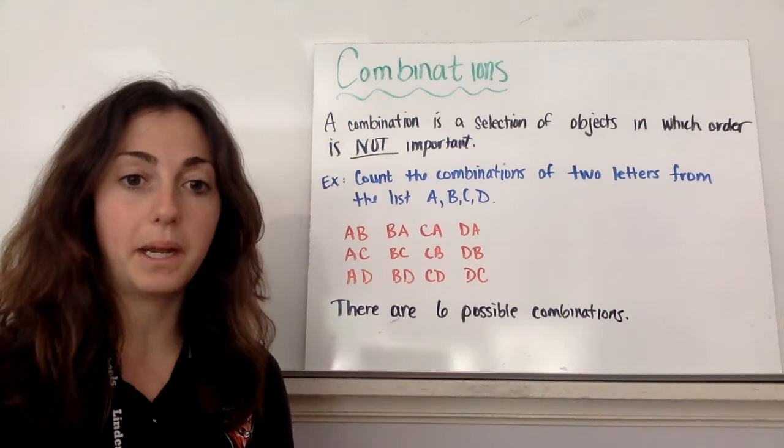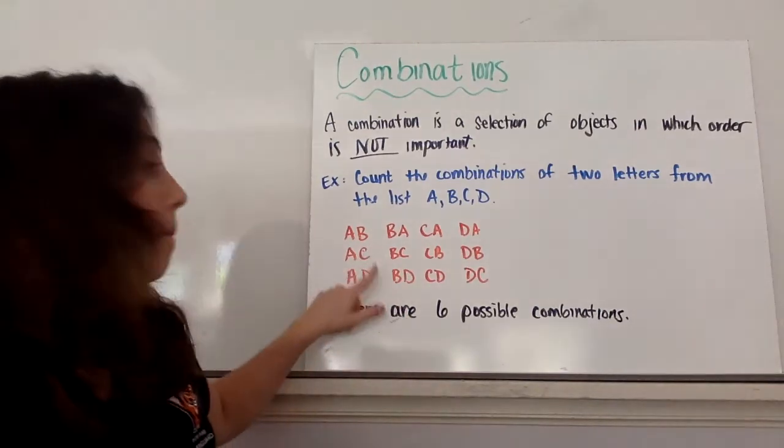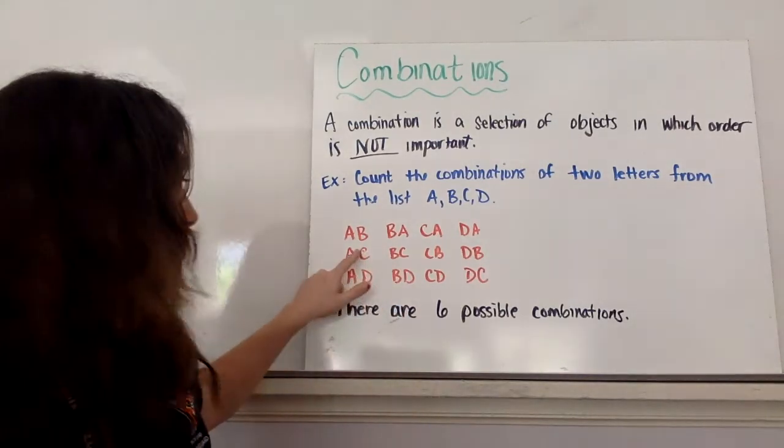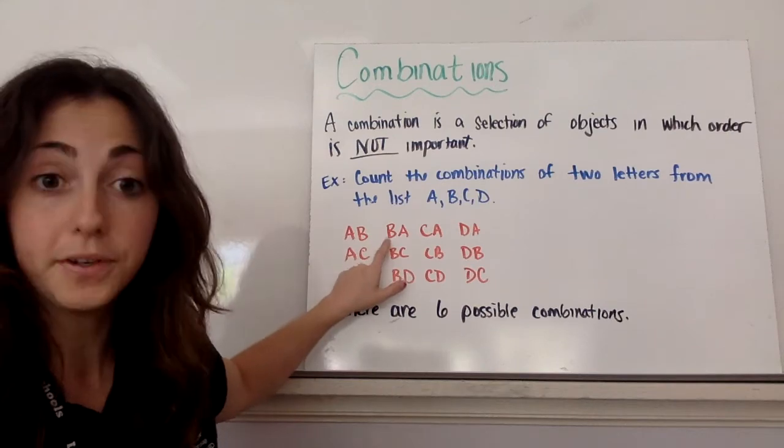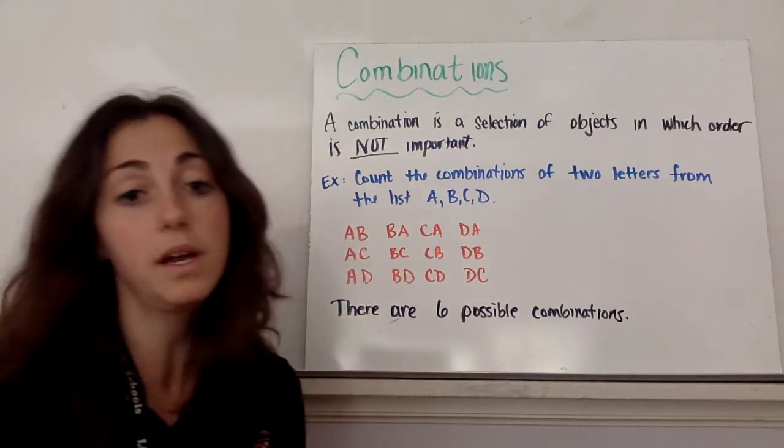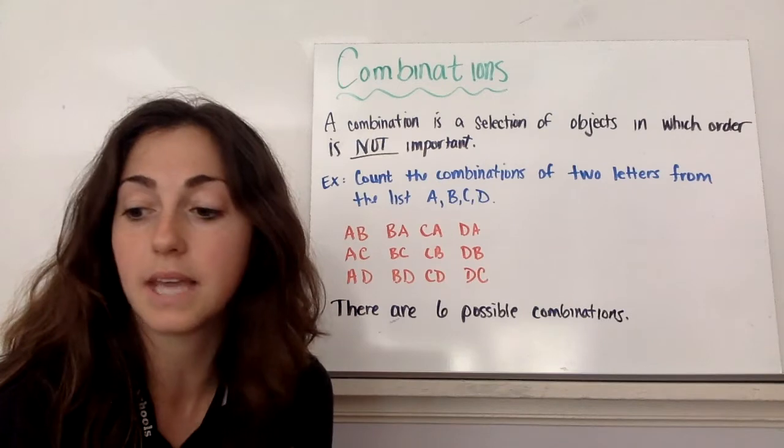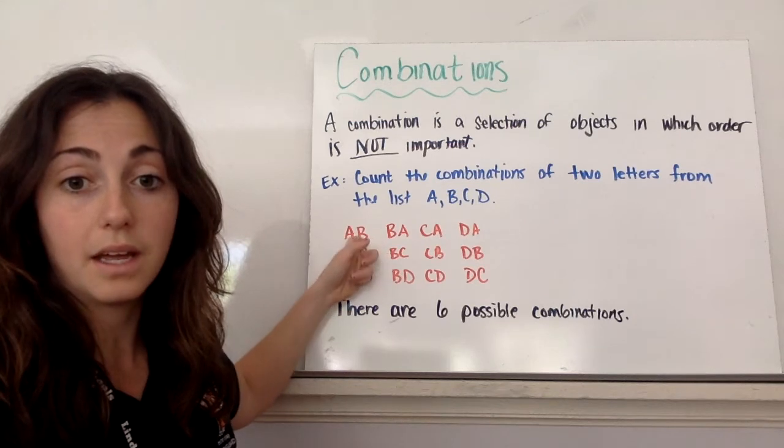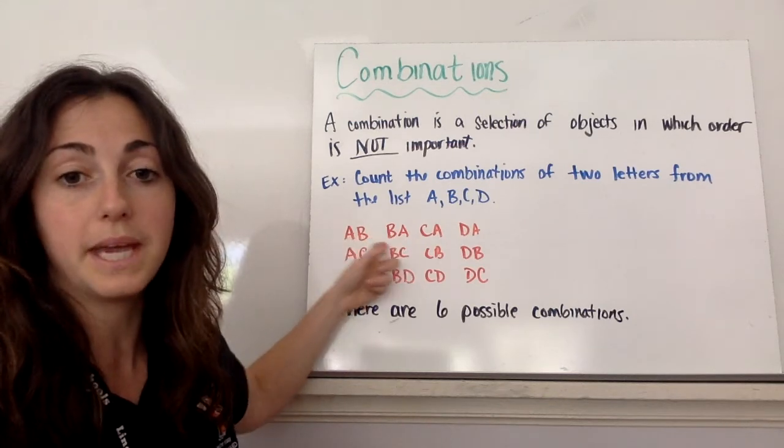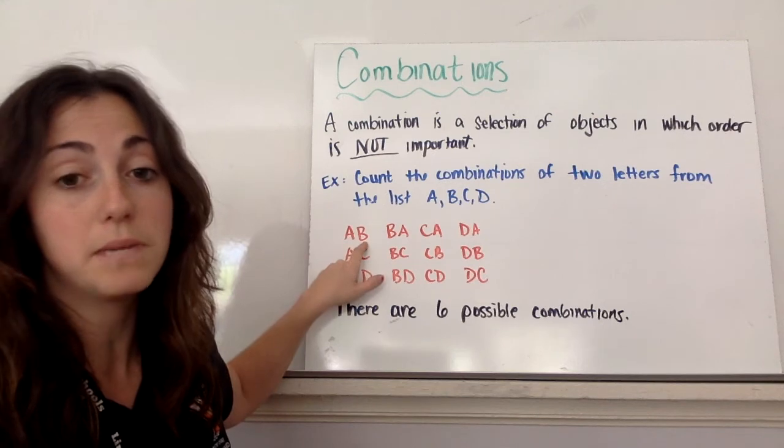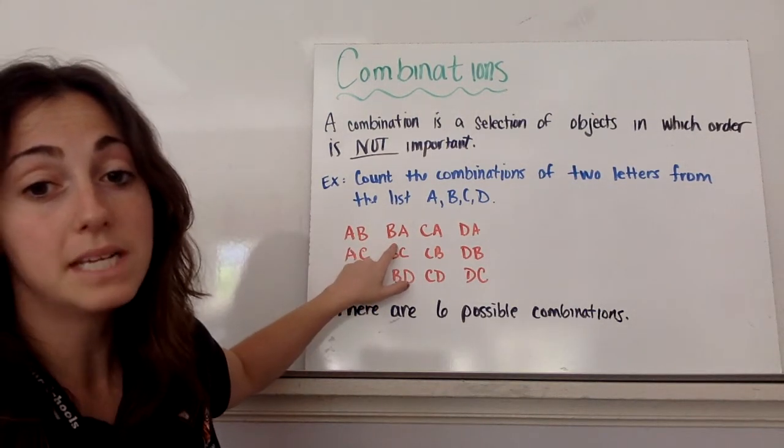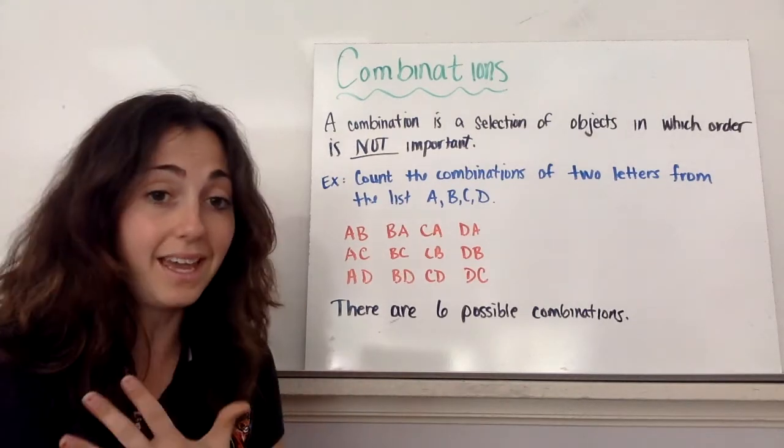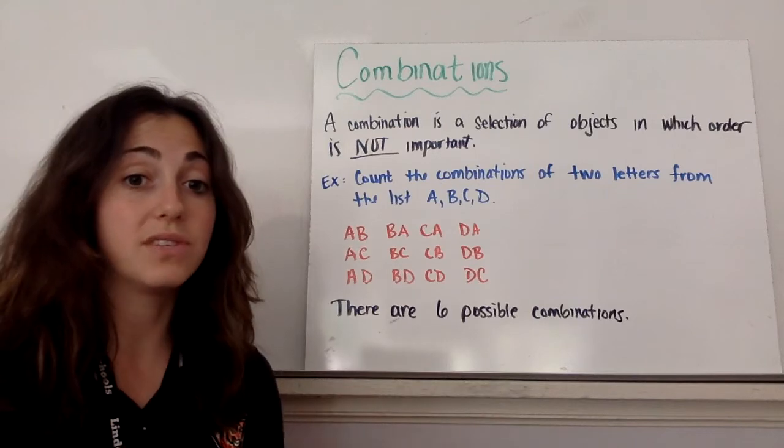Notice that I used this systematic pattern to make sure I reached all. Now if this were a permutation, order is important. A, B is different than B, A. For example, maybe the first one is a president, and the second one is a vice president. So then A, B would be different than B, A, because student A is the president, student B is the vice president. And in this case, student B is the president, and student A is the vice president. But here where it's not important, B, A and A, B are paired, and they're the same thing.